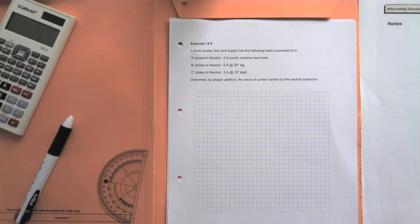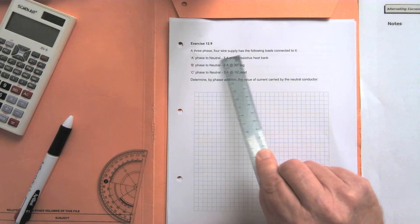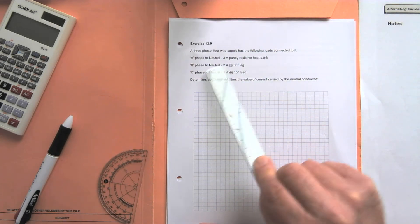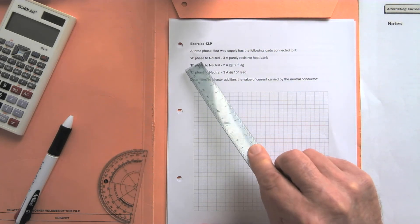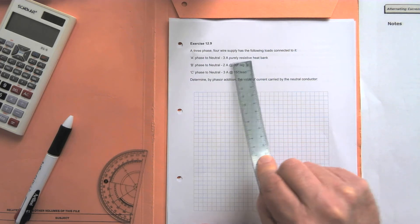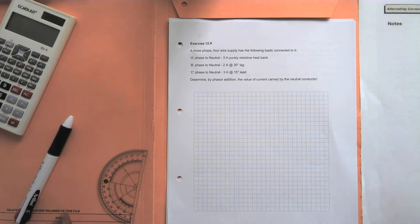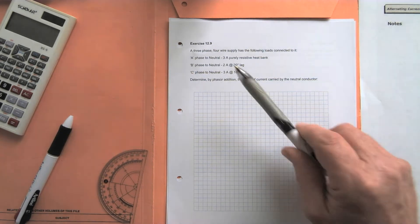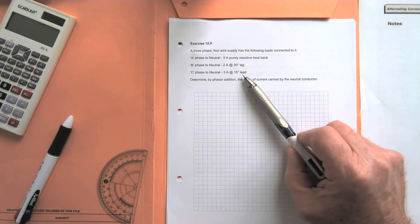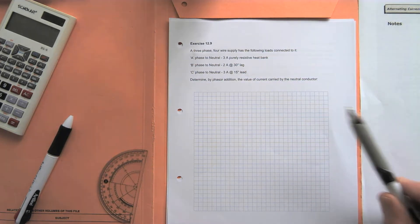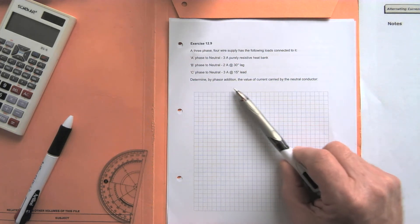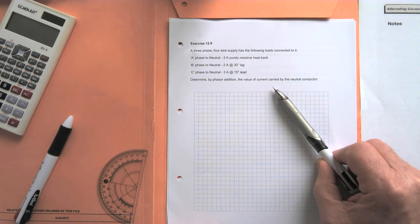This problem is a three-phase four-wire system, so we've got a neutral in this problem. We've got three amps purely resistive in phase on the A phase, B phase has 30 degrees lagging current, and C phase has three amp leading current. We want to use a phasor diagram to determine the value of neutral current carried by the neutral.